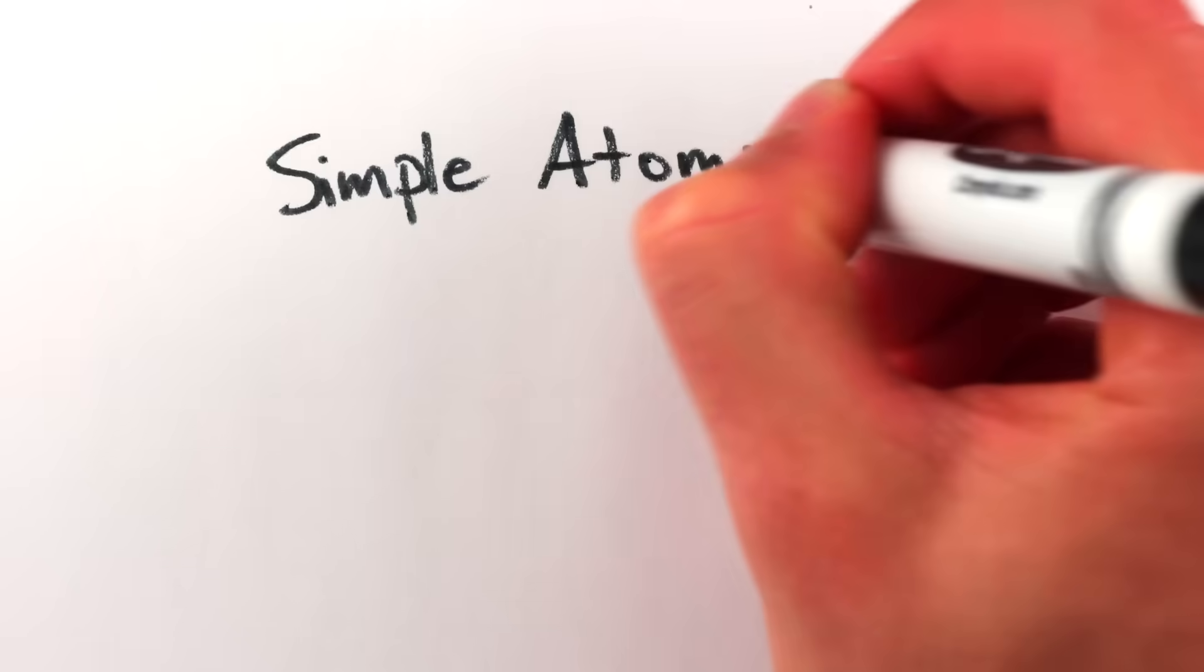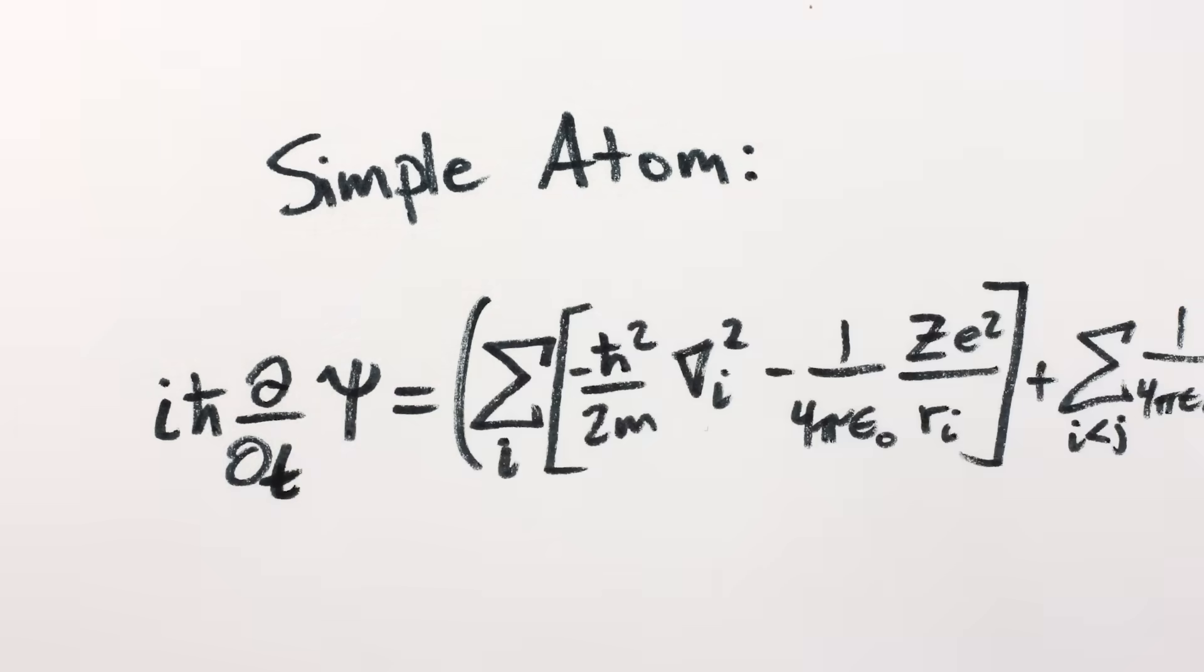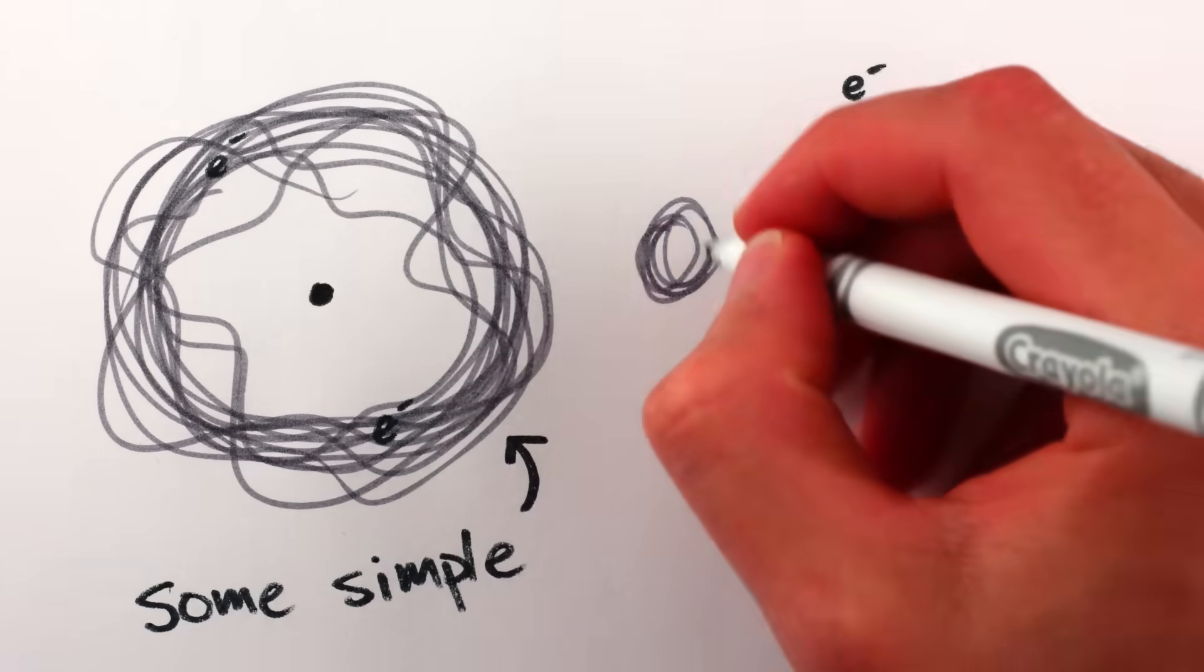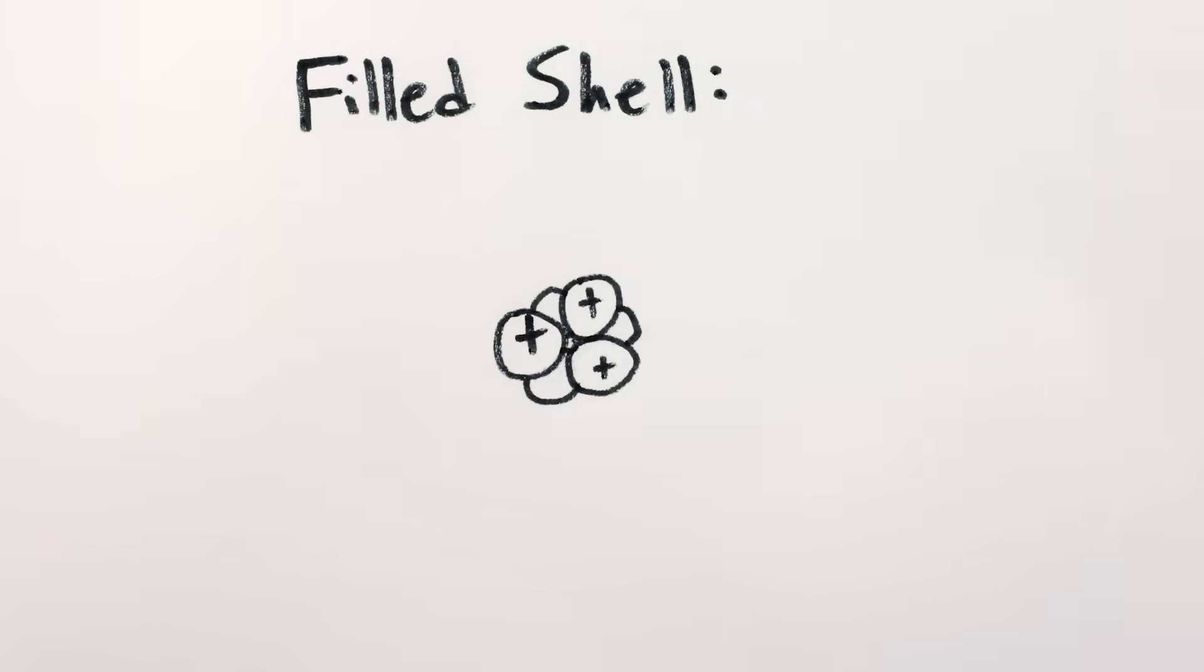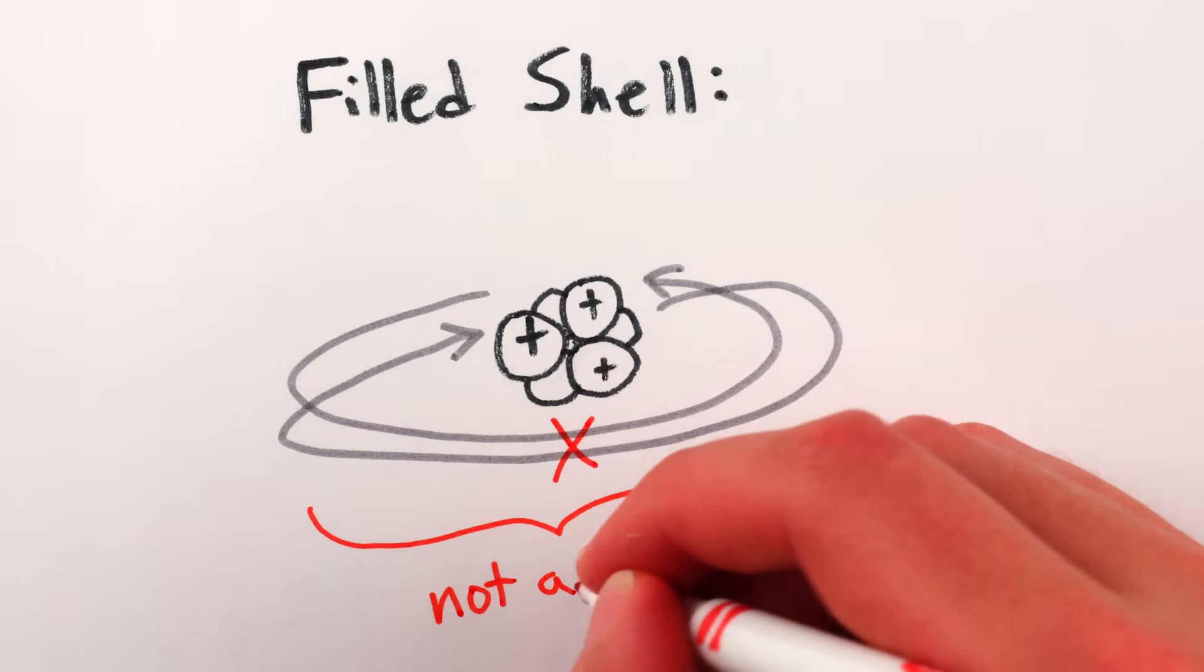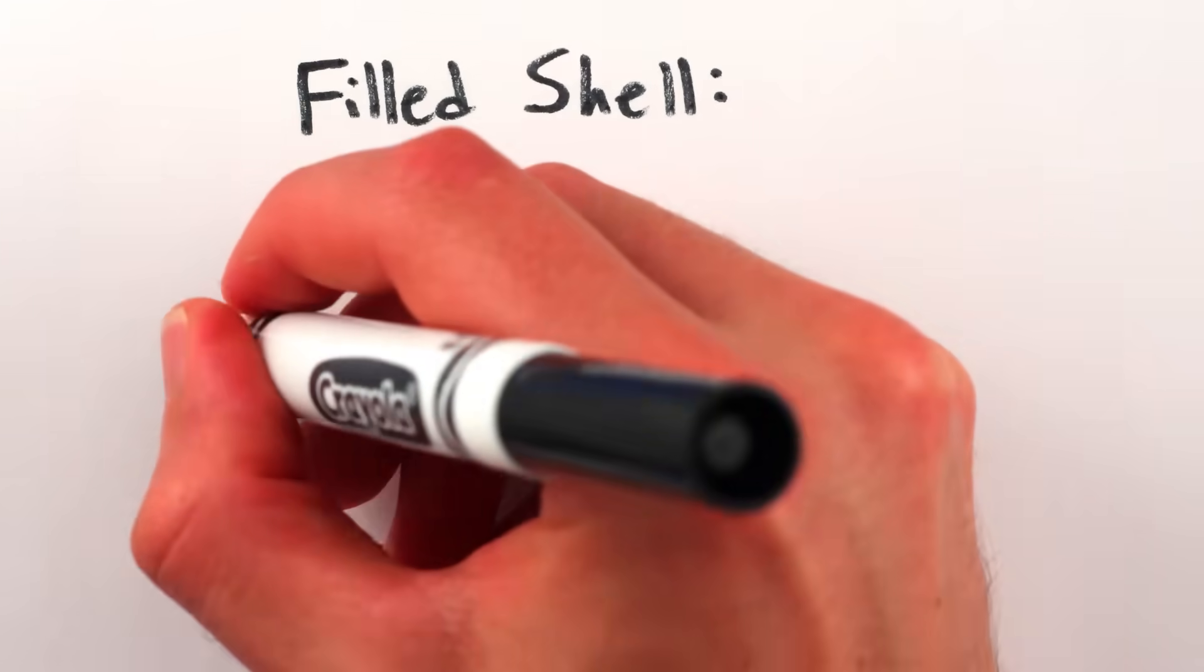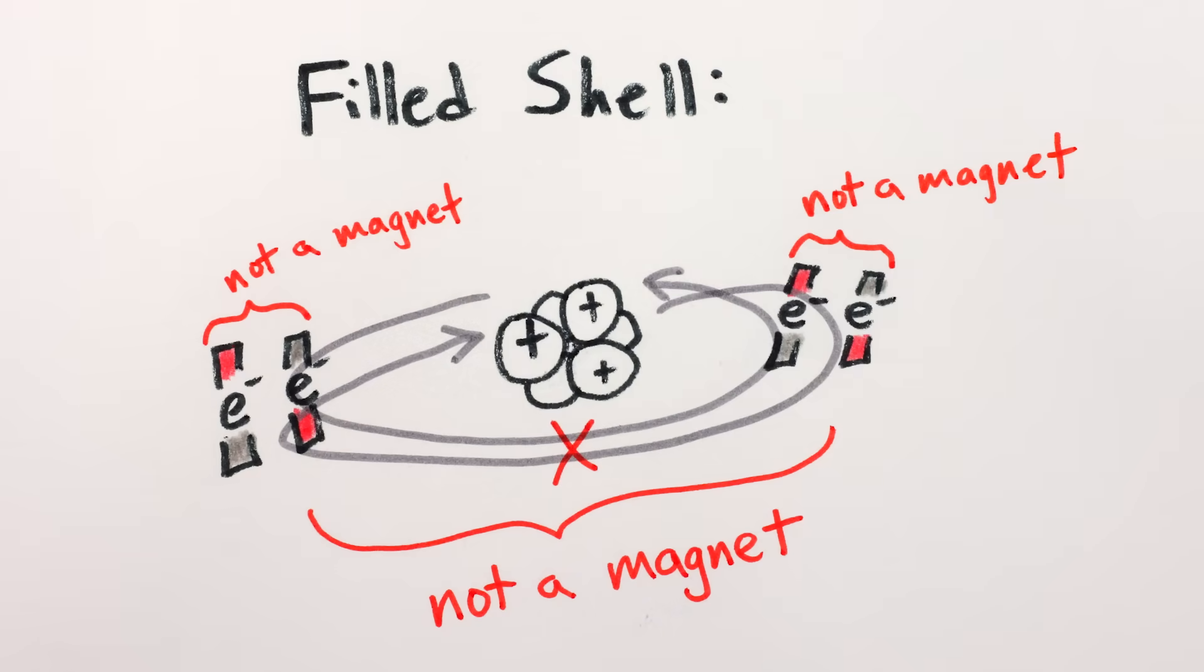Except these don't usually contribute to the magnetic field of an atom. Here's why. Electrons in atoms are accurately and complicatedly described by quantum mechanics, but the gist of the story is that electrons congregate in shells around the nucleus. The electrons in any filled shell zoom equally in all directions, so the currents they generate cancel out and generate no magnetic field.